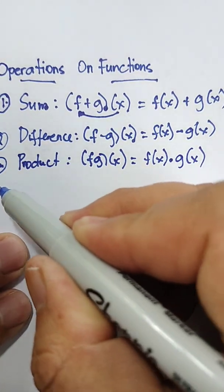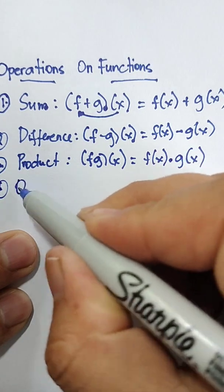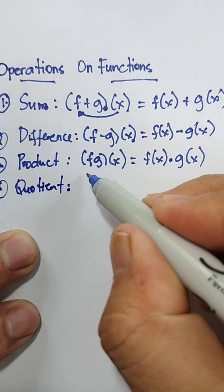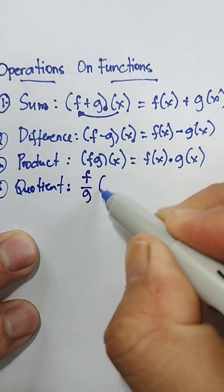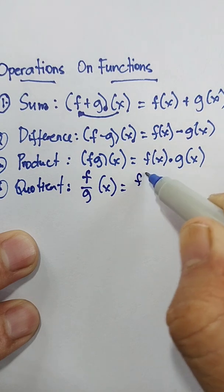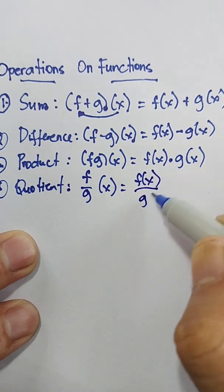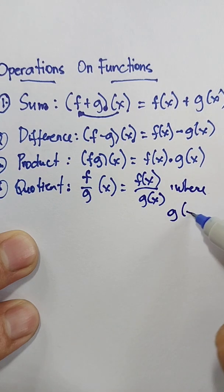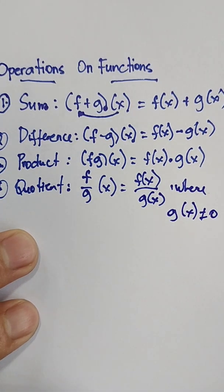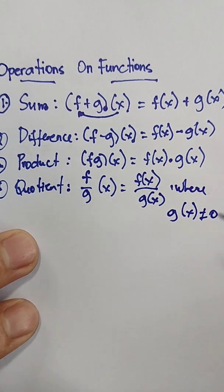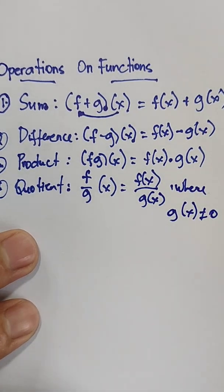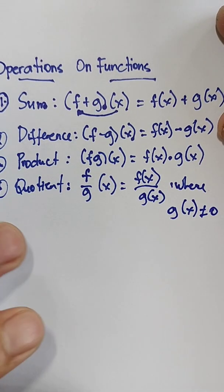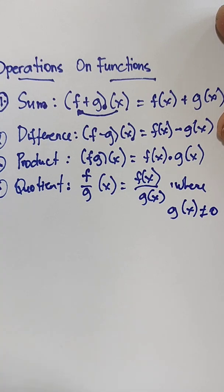And for number four, last one is the quotient. What is the formula in finding the quotient of functions? That is f over g times x equals f of x over g of x, where g of x is not equal to zero. Because if the denominator is zero, the answer will be undefined.